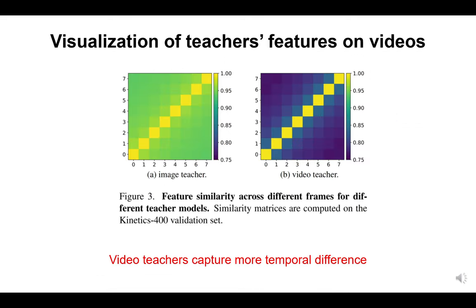In the previous experiments, we find that students distilled with different teachers show different properties on the performance of different downstream datasets. Since the properties of target features generated by different teachers may influence student performance, we also analyze the target features generated by different teachers. We study the similarity between feature maps across different frames of each input video and visualize the similarity matrices of different target features computed on the Kinetics 400 validation set. We find that for image teachers, the feature maps of different frames are almost the same, while for video teachers, the features of different frames show larger differences. This indicates that video teachers capture more temporal difference, so students distilled from video teachers can learn stronger temporal dynamics and perform better on temporally heavy video tasks.